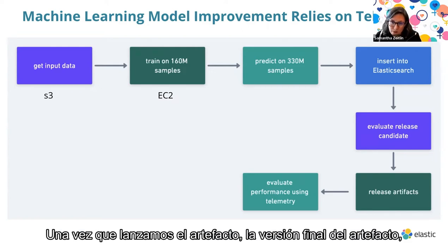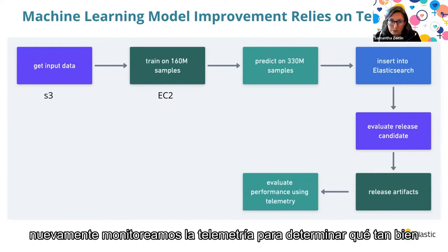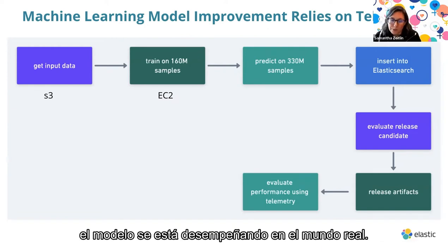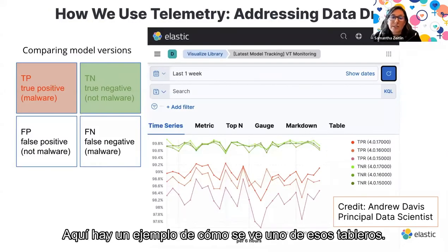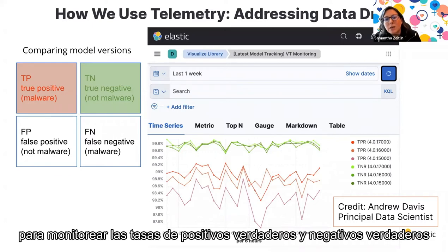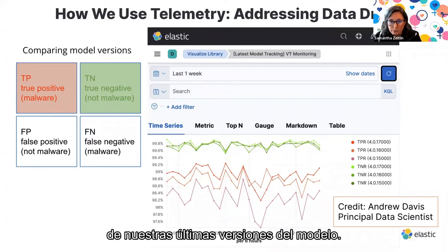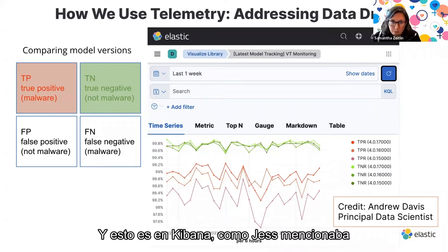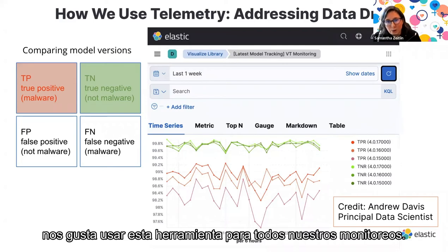Once we release the final version of an artifact, we again monitor the telemetry to determine how well the model is performing in the real world. Here is an example dashboard created by principal data scientist Andrew Davis to monitor the true positive and true negative rates of our last few model versions. This is in Kibana — we like to use this tool for all of our monitoring.